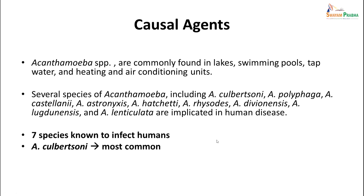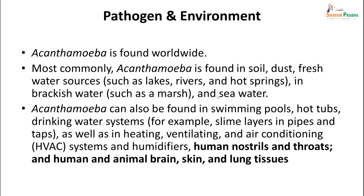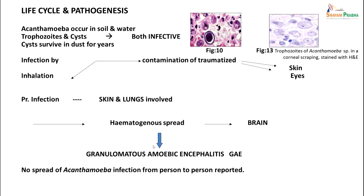A. culbertsoni is the one most commonly seen causing encephalitis. Two morphological forms are seen - trophozoite and cyst - and both the amoeboid trophozoite and the cyst are infective to humans. The pathogen is found worldwide in the environment, in soil, dust, fresh water, sea water, and brackish water, as well as in swimming pools, hot tubs, drinking water facilities, and ventilating and air conditioning units. It can even be found dormant in human nostrils and throats, or in tissues that have been infected for a long time. The amoebae can remain in soil and water for years in either trophozoite or cyst form, and both forms are infective.